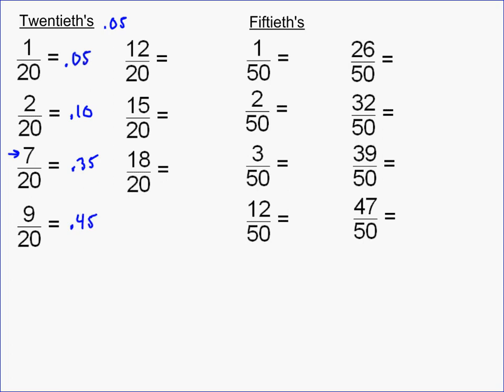12, that's going to give you 12 times 5 is 60. So it's going to be 0.6 or 0.60. 5 times 15 is 75, so it's going to be 0.75. And then 18 times 5 is 90, so it's just going to be 0.9. So again, when you're doing 20ths, the thing you've got to remember is that you're multiplying by 5.